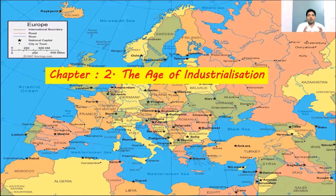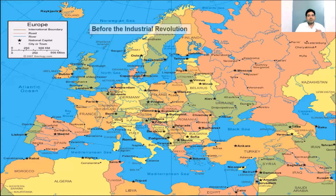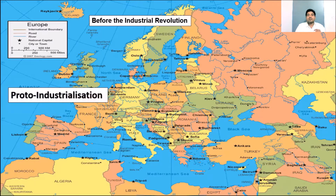We are going to discuss how industrialization progressed at different stages and how production happened before the process of industrialization began. Before industrialization, this period is called proto-industrialization.